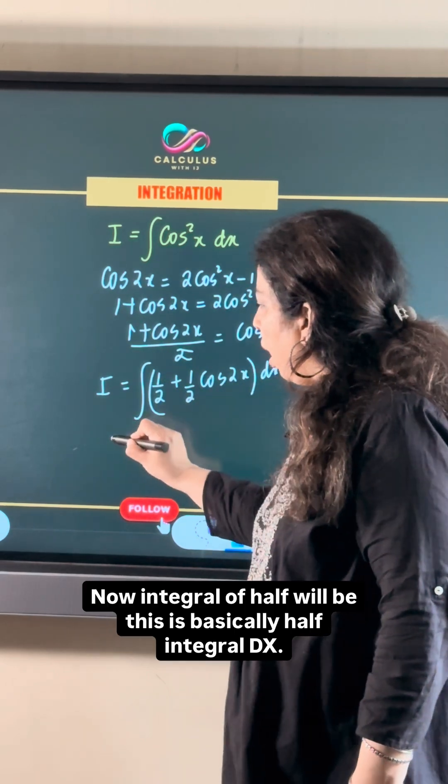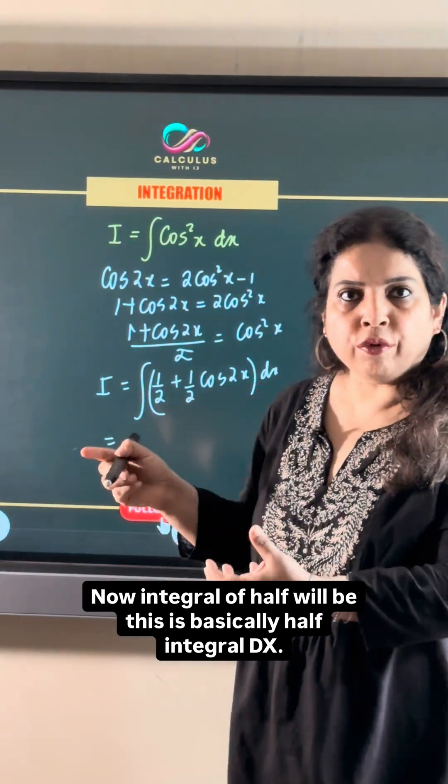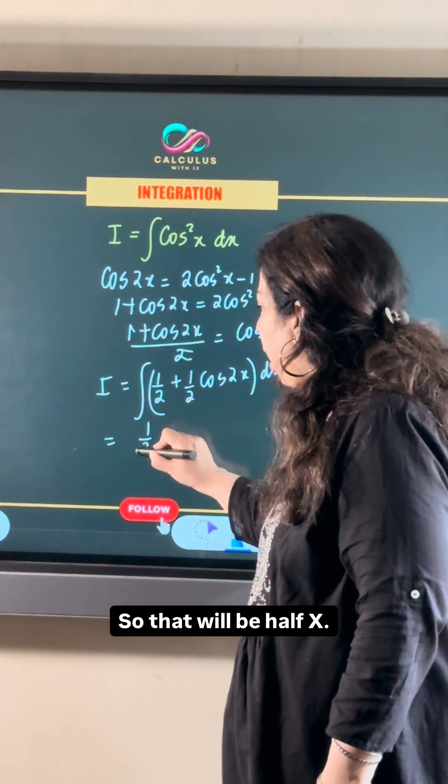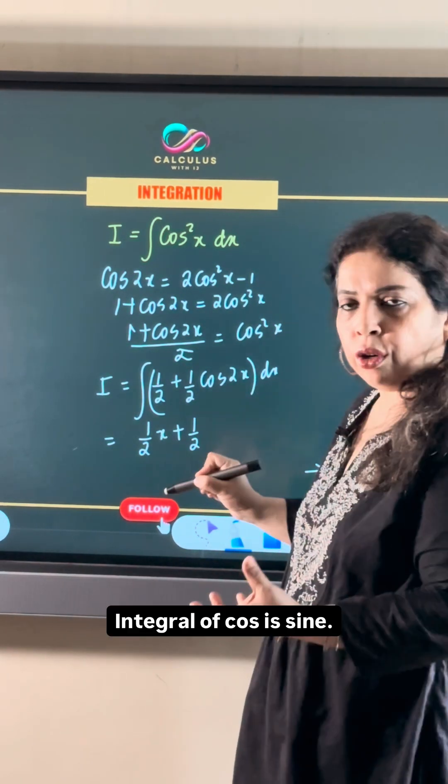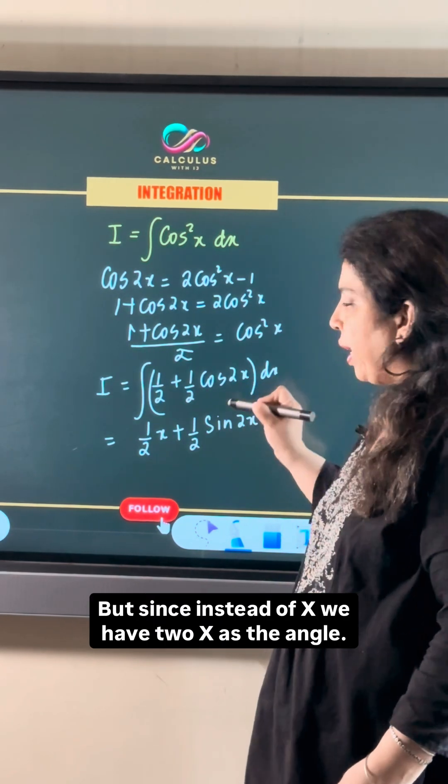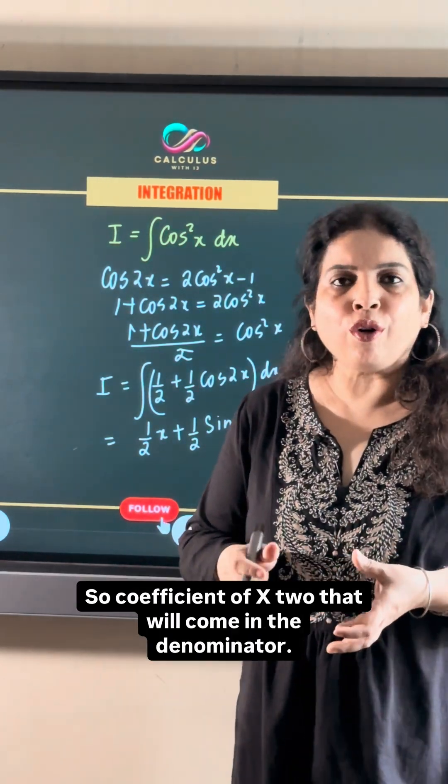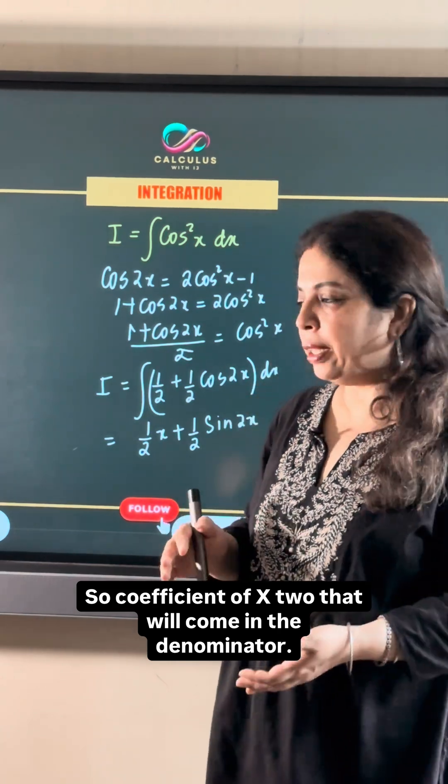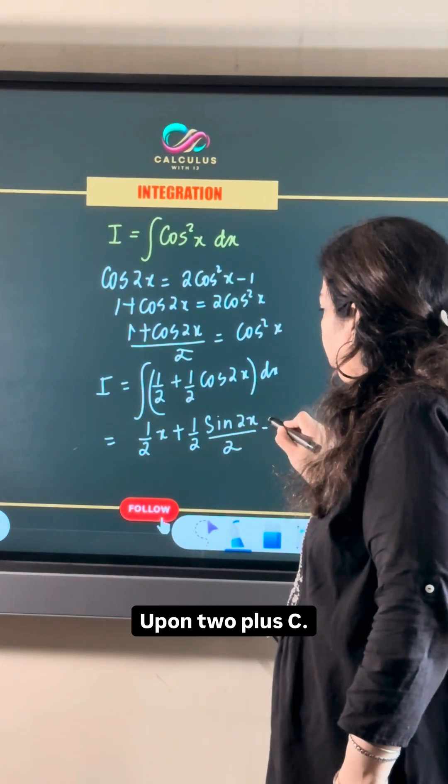Now integral of half will be half x plus half integral of cos is sine, sine 2x. But since instead of x we have 2x as the angle, the coefficient of x, which is 2, will come in the denominator upon 2 plus c.